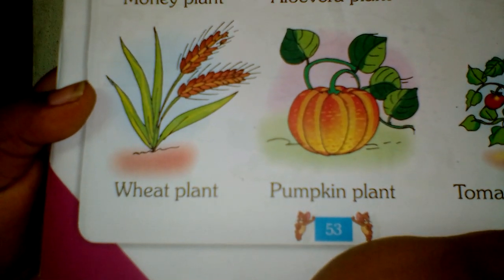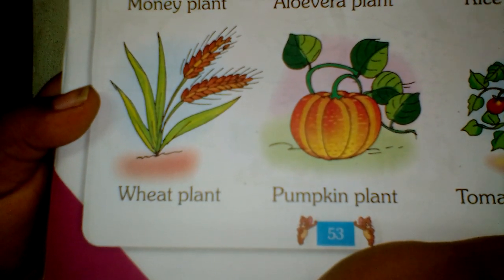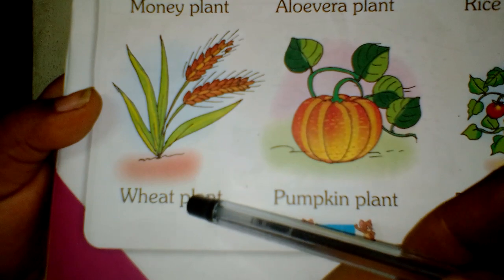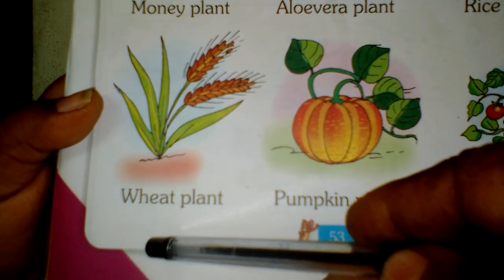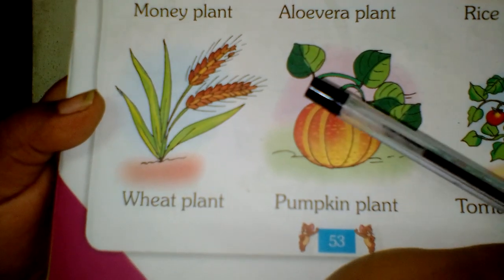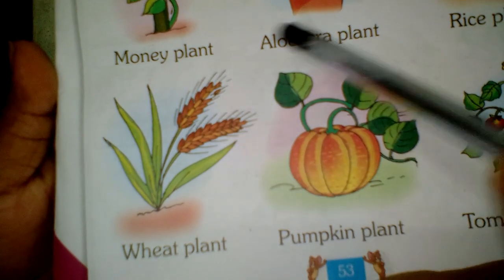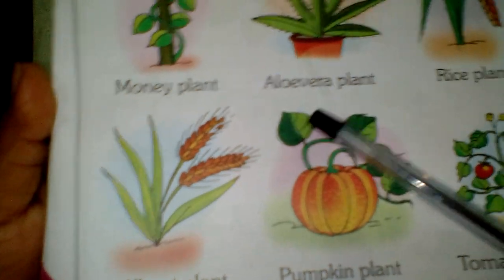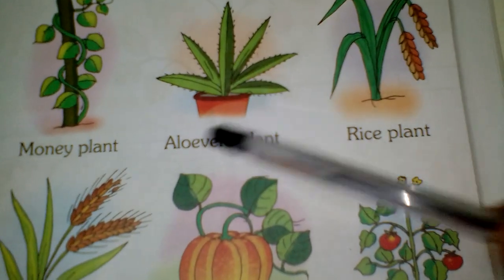Good afternoon, children. Today we are going to study EVS. We are going to study wheat plants, honey plants, honey plant, aloe vera plant, and rice plant.